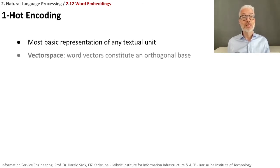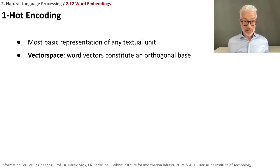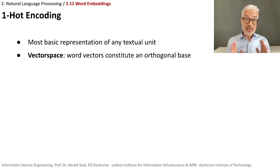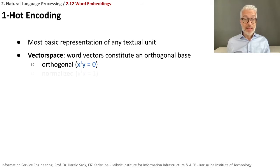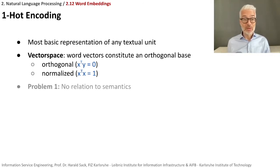One-hot encoding is the most basic representation for any textual unit. You put all your words into a huge vector space where the dimension equals the number of words you want to represent. Since each single word has its own dimension, the word vectors constitute a so-called orthogonal base — meaning each vector is orthogonal to every other vector, there is no similarity between them. They are also normalized, meaning a vector multiplied by itself equals one. So it's a normalized orthogonal base, not weighted in any way.